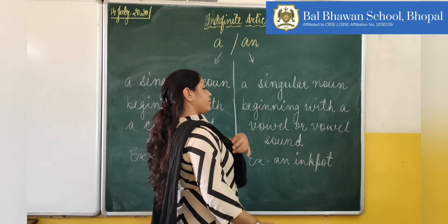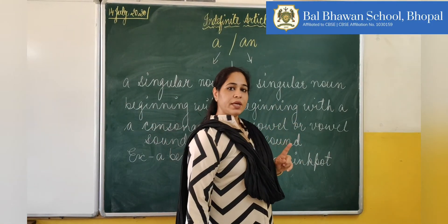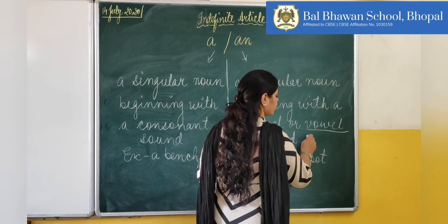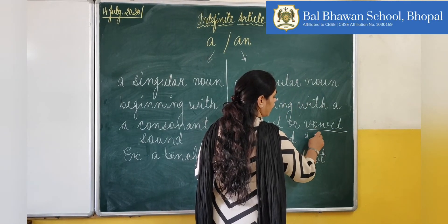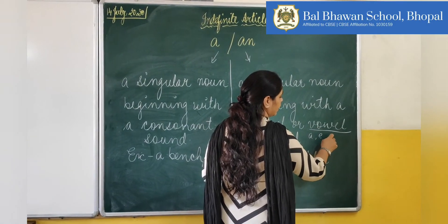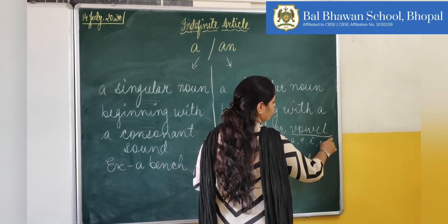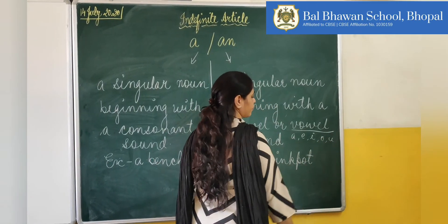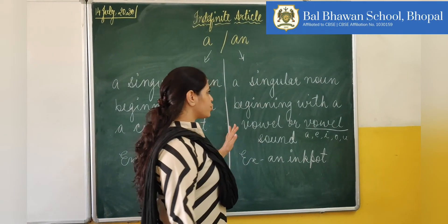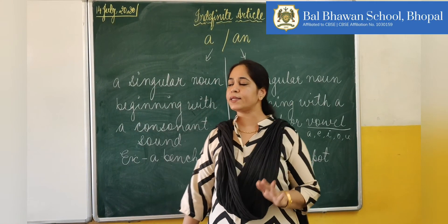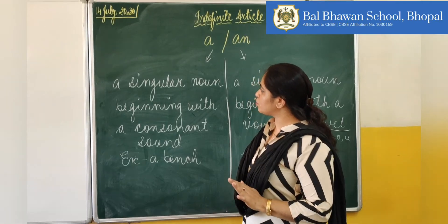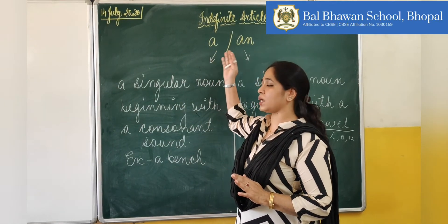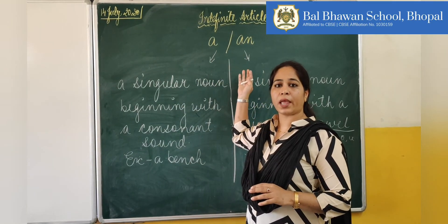There are five vowels that we have done and you must be knowing about them: A, E, I, O, U. So this is the simplest way I can explain the use of indefinite article 'a' and 'an'.